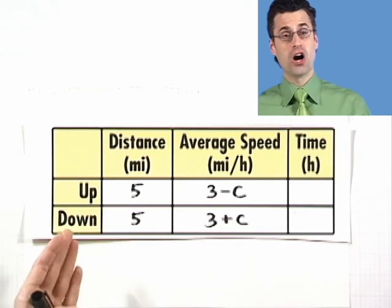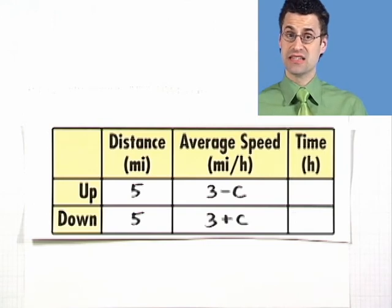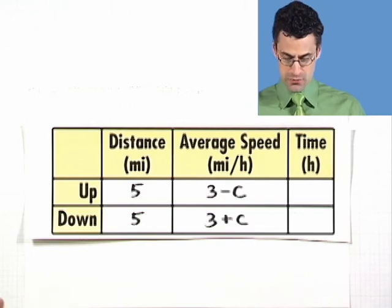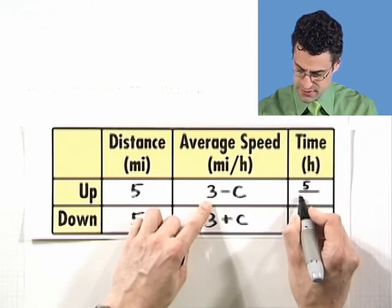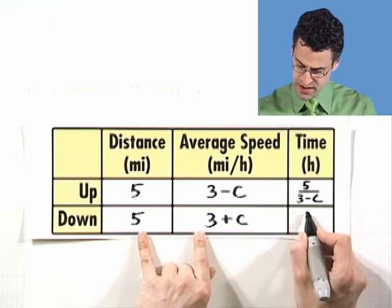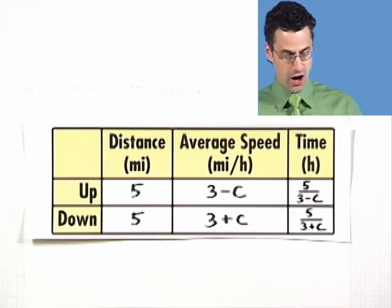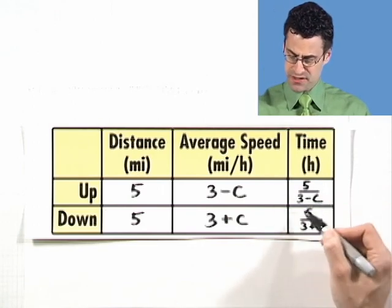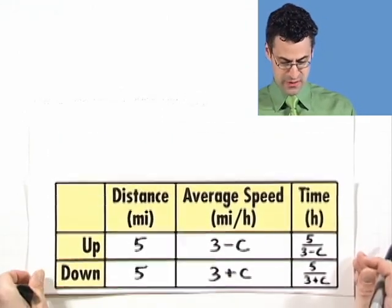Now, how long does it take her to paddle upstream? Well, we can figure this out because we know that distance equals rate times time, so time equals distance divided by rate, which in this case is going to be five divided by three minus C. Similarly, the time it takes her to go downstream is five divided by three plus C. All right. Well, now we're home free because we know the whole trip took her six hours. That means that this number plus that number has to equal six, and look what just happened.